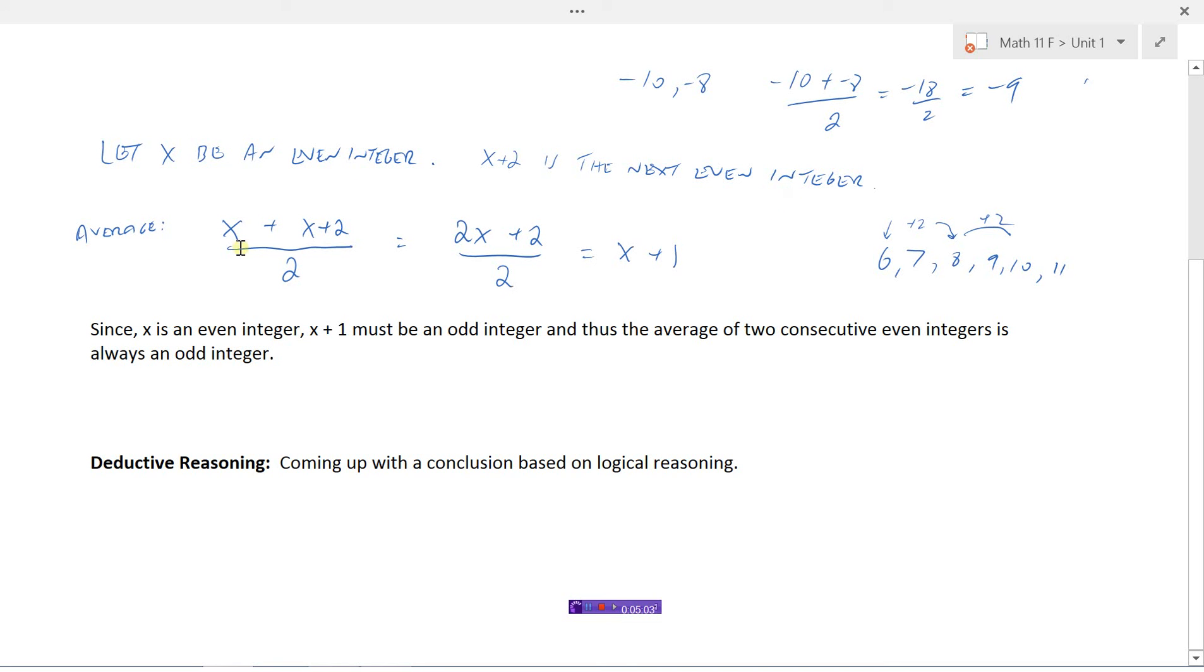And if my average ended up being x plus 1, I know that if x is an even integer, the next number always has to be an odd integer. That's logical reasoning.